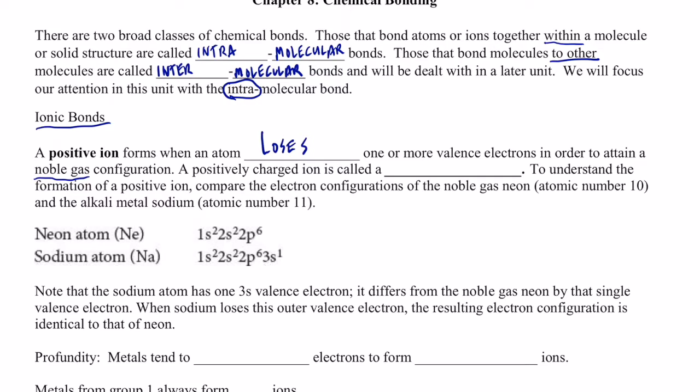Now, there's a name for a positive ion. We just don't call them positive ions. We call them cations. So a positively charged ion is called a cation. It's not pronounced cat-ion, as some of you will like to pronounce it. It's pronounced cation.